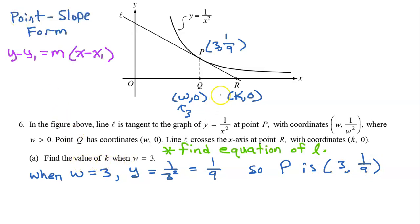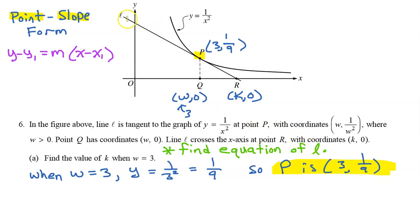My strategy will be to find an equation of line L. I always like to use point-slope form, which reminds me that all I need is a point and the slope. We already found the point — it's 3 comma 1/9, the point of tangency. So now all we need is the slope of this tangent line.